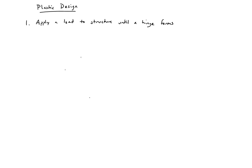If we were looking at a section — let's say we have a propped cantilever — what we'll do is we'll apply a load P1, a point load at the center, until a hinge forms. We know our moment diagram for this section looks like this, with the maximum moment at the end equal to 3PL over 16, and the middle moment being 5PL over 32.